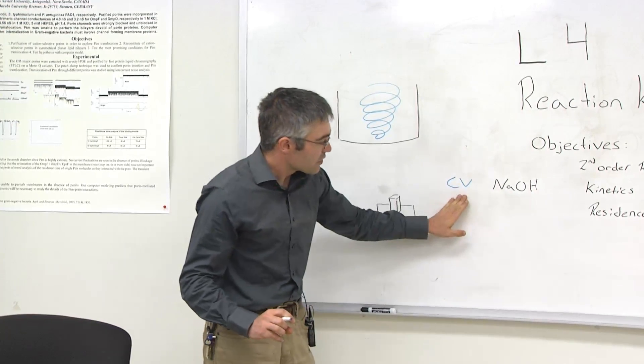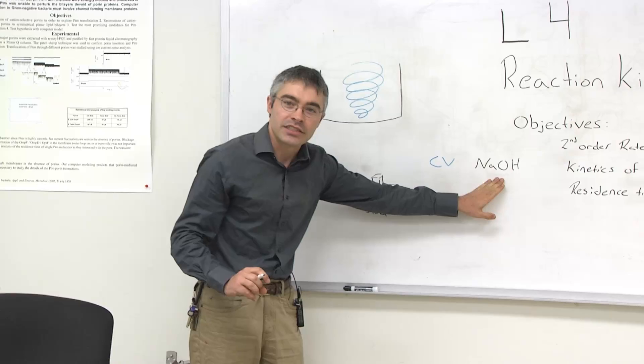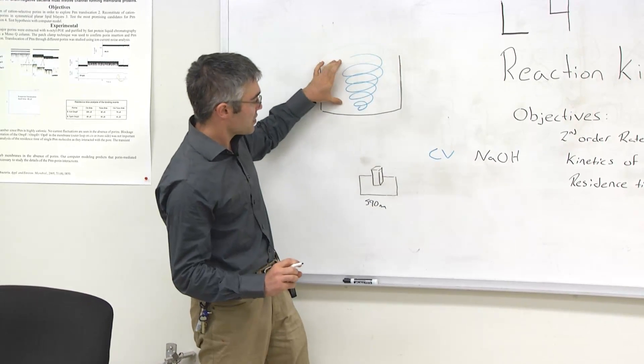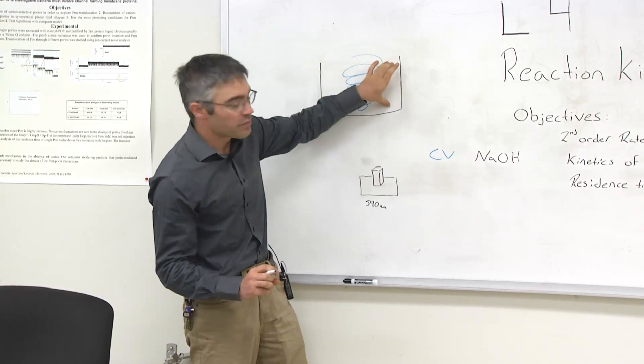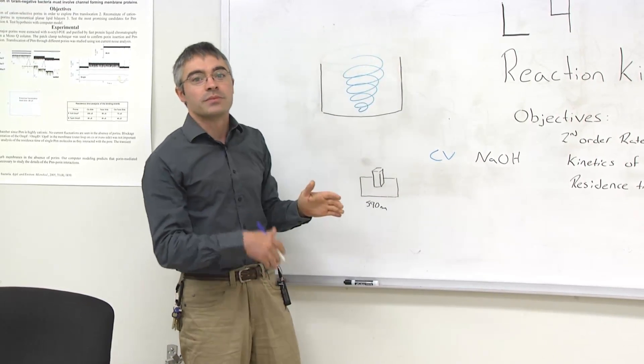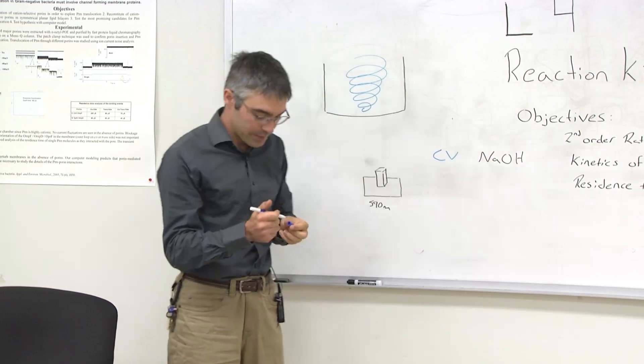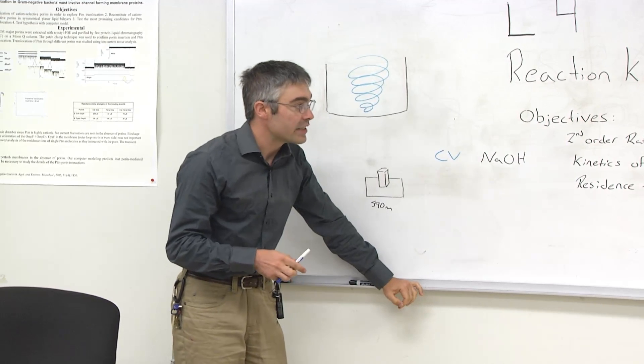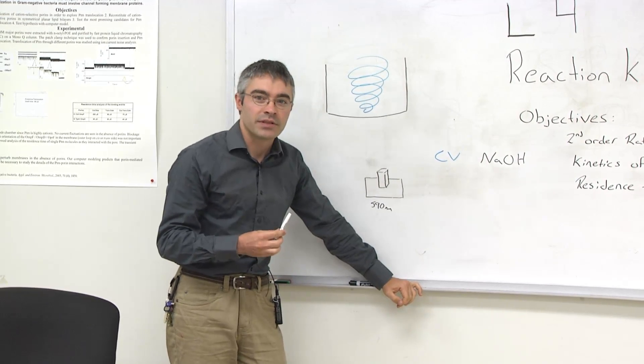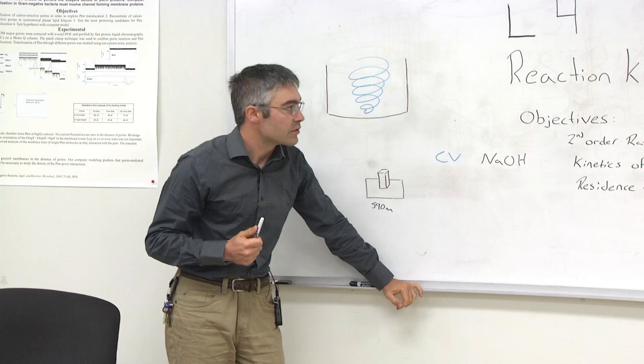The product between crystal violet and NaOH is completely colorless. So as the solution continues to react in the second order, we will eventually get a completely colorless solution, which you'll be able to assess at the end of the experiment. You'll be doing this for three different concentrations of crystal violet and NaOH to get a true estimate of the reaction rate constant for this given reaction.